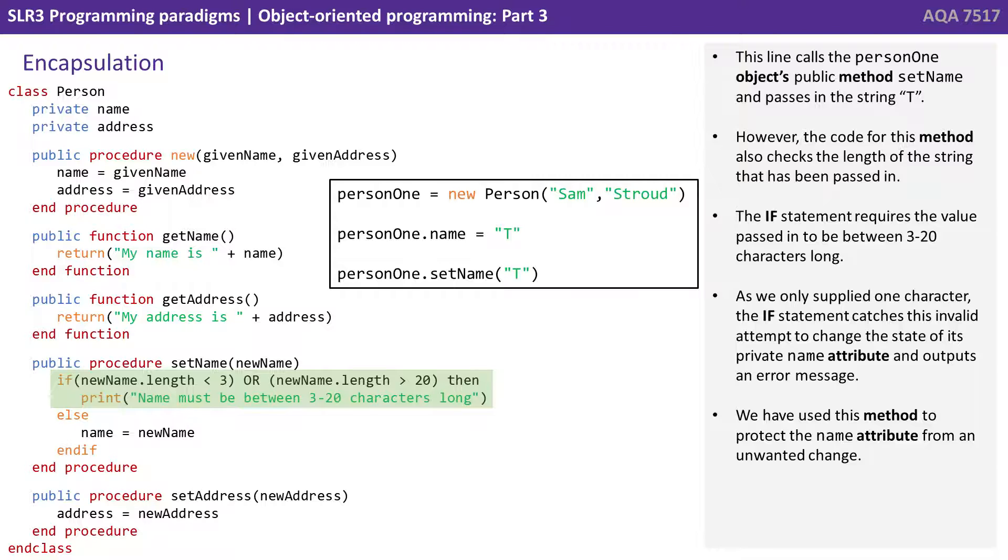As we only supplied one character, the if statement catches this invalid attempt to change the state of its private name attribute and instead outputs an error message. We've used this method to protect the private name attribute from an unwanted change.